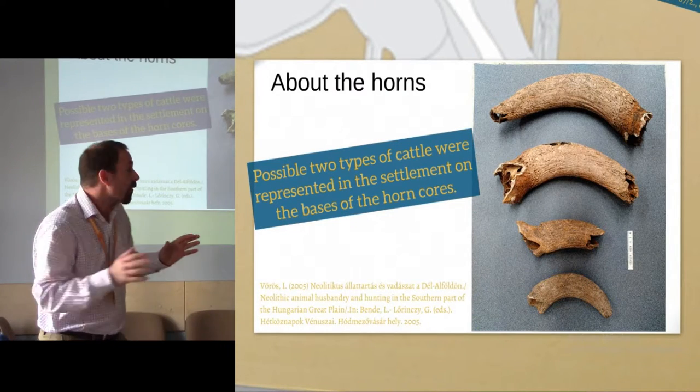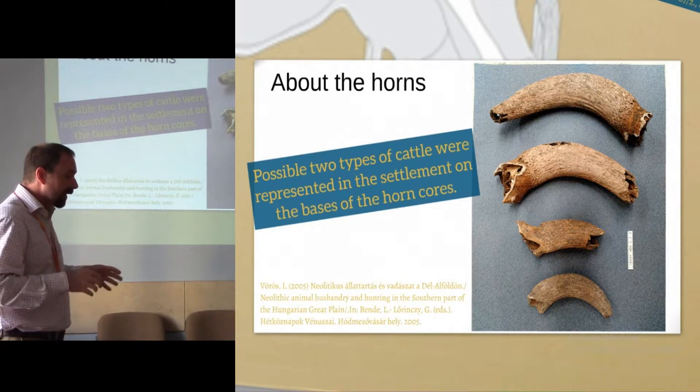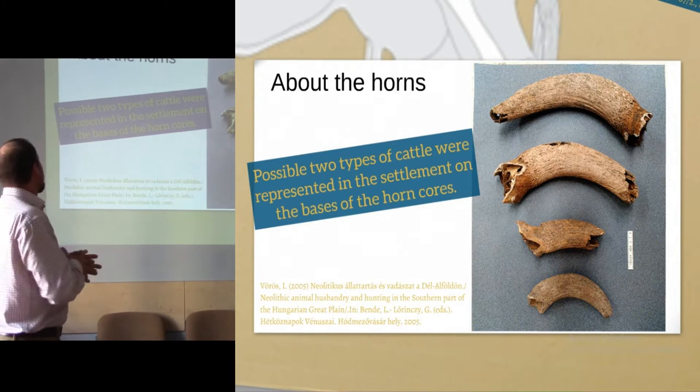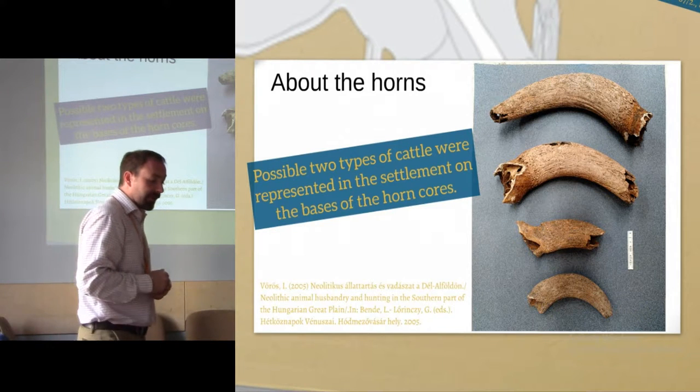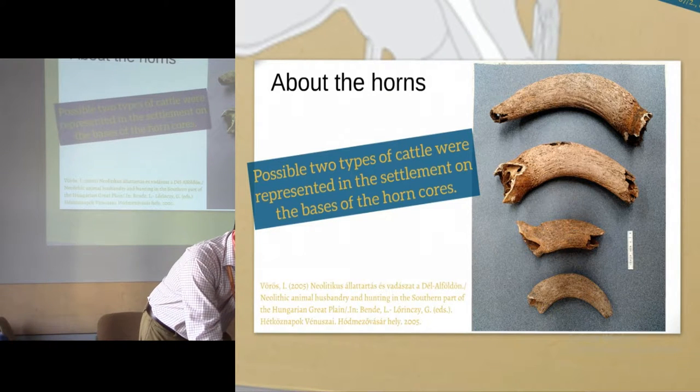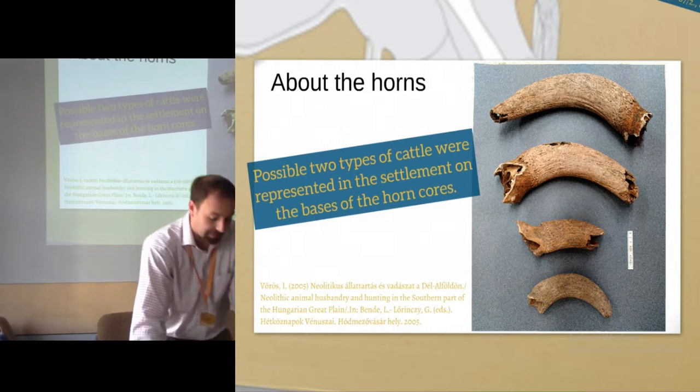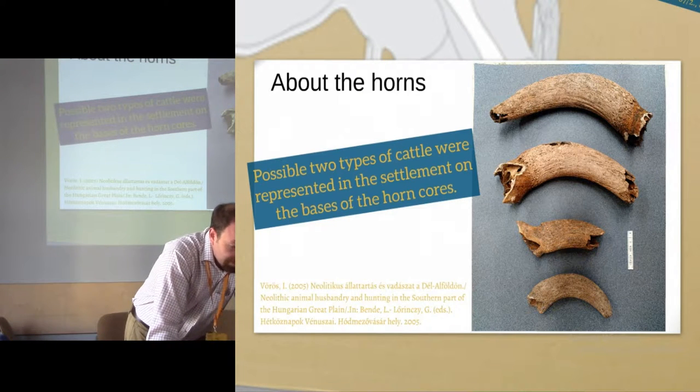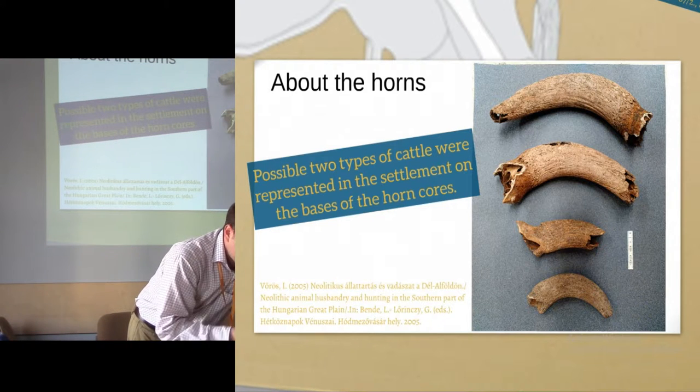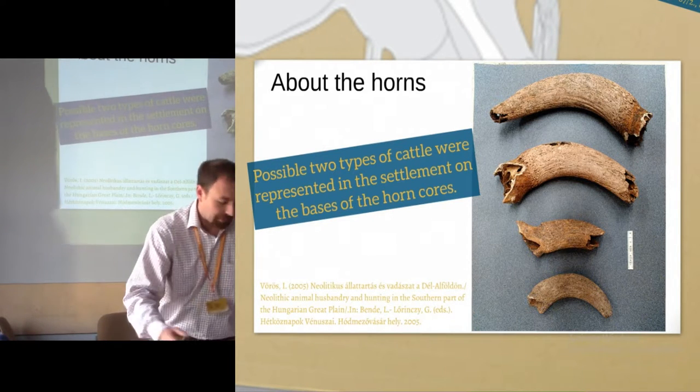But we have a few bone cores, a larger one and a smaller one. On the basis of this, we can suggest that possibly two types of cattle were represented in the settlement in this period. This reflects the work of István Bökönyi, the Hungarian archaeozoologist, who noticed in his work that during the Neolithic time in the Carpathian basin, two types of cattle maybe lived in the area, a larger one and a smaller one.